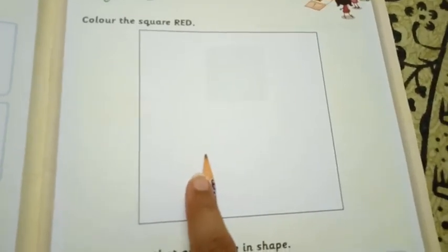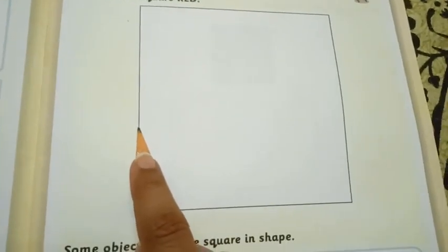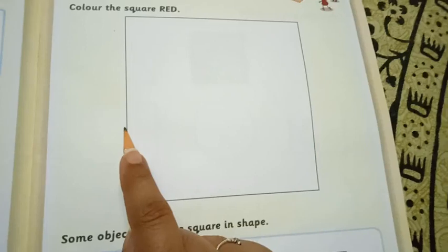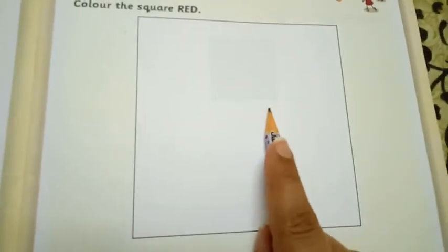So children today I am going to introduce you to a new shape. Children see. What is this? This is a shape. And how does it look like? Does it look like balloon? No. Does it look like box? Yes. Now children as you all have a name, this shape also have a name.